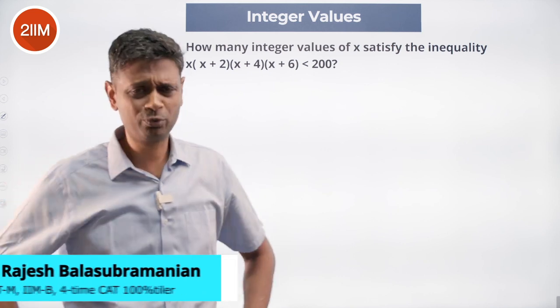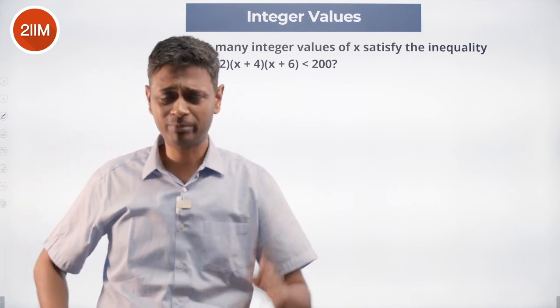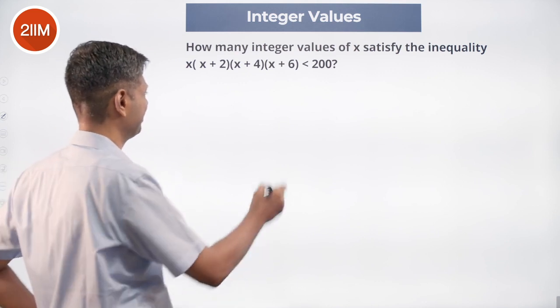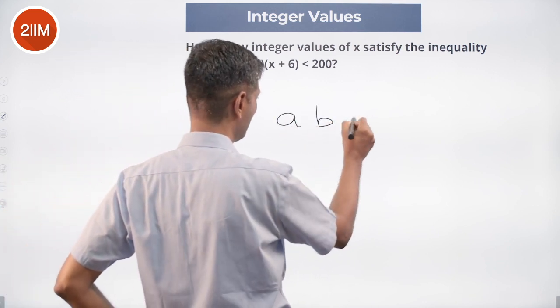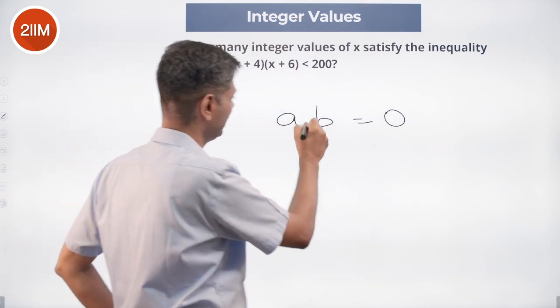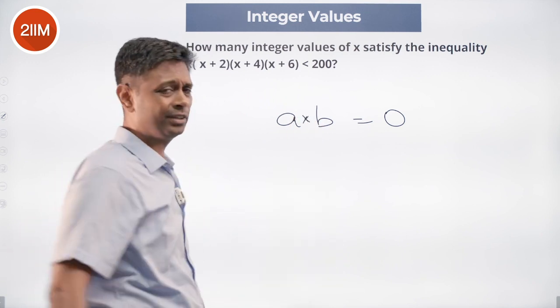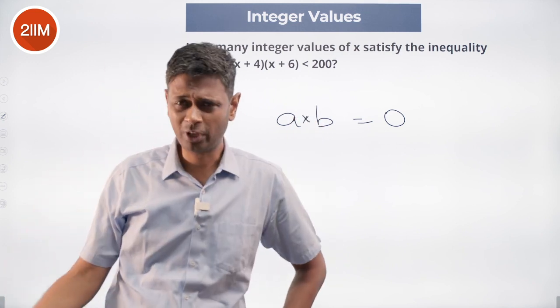Lovely, this is a beautiful question in terms of one of the wonderful ideas in mathematics. If a into b is 0, if a into b is 0, then either a is 0 or b is 0 or both can be 0.